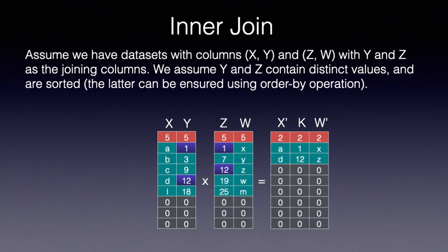Inner join operation involves concatenating rows of two data sets based on a common value for the joining columns. We illustrate the verification of inner join for data sets with two columns each, but more general case of greater than two columns reduces to this case by taking random linear combination of non-joining columns. We will assume that joining columns have distinct values and are sorted. Otherwise, we can use order-by to sort the data sets first.